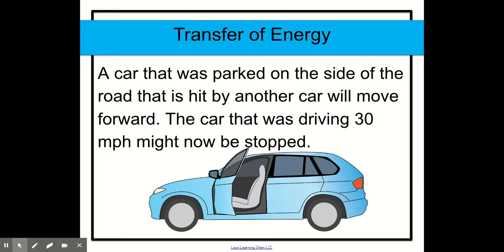So it had potential and then it became kinetic energy when it got crashed into or collided into. And the other car had kinetic energy but because it crashed it now stopped. So now it has potential energy. Do you see now how the energy transfers?